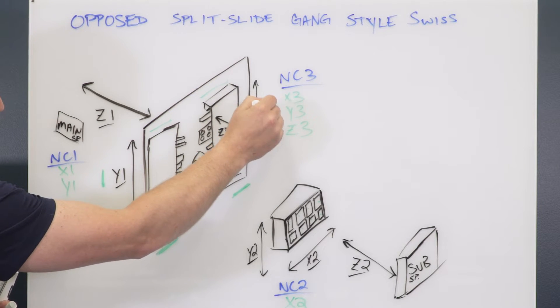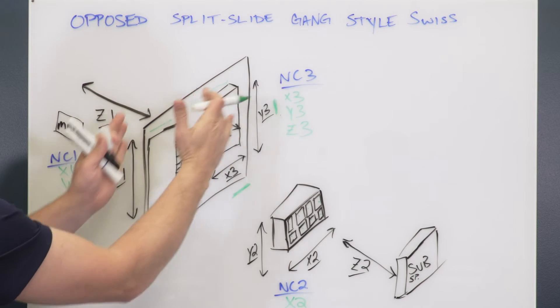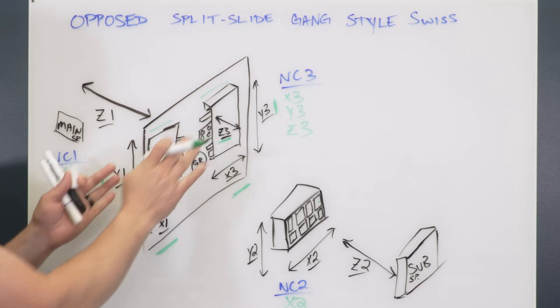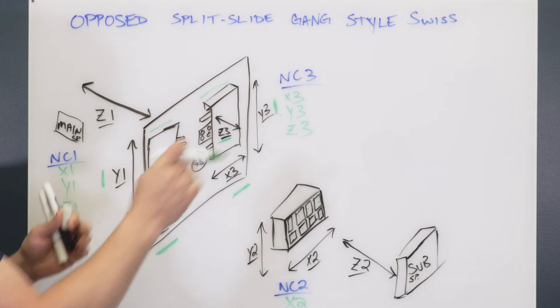These can move like this, they can move in and out like this. The Z3 axis really makes a huge difference and that has its own axis coming out this way, 60 millimeters of stroke.